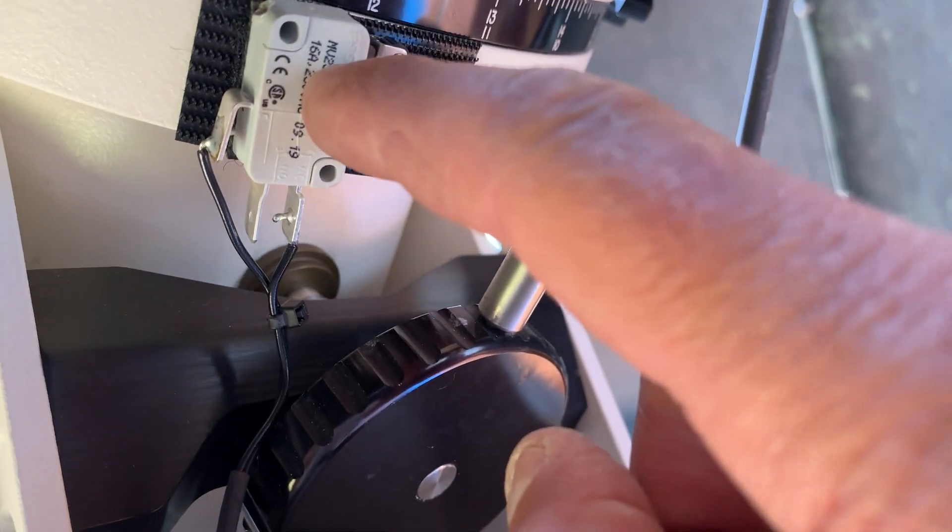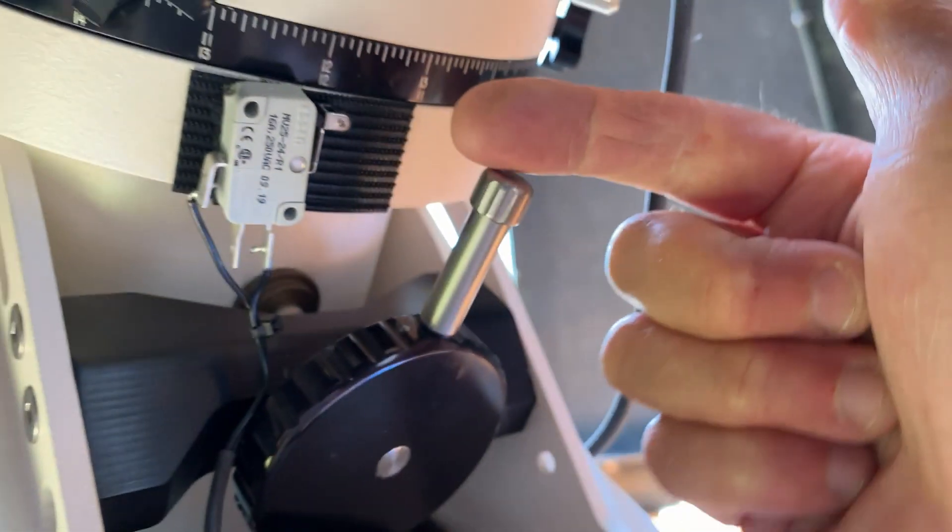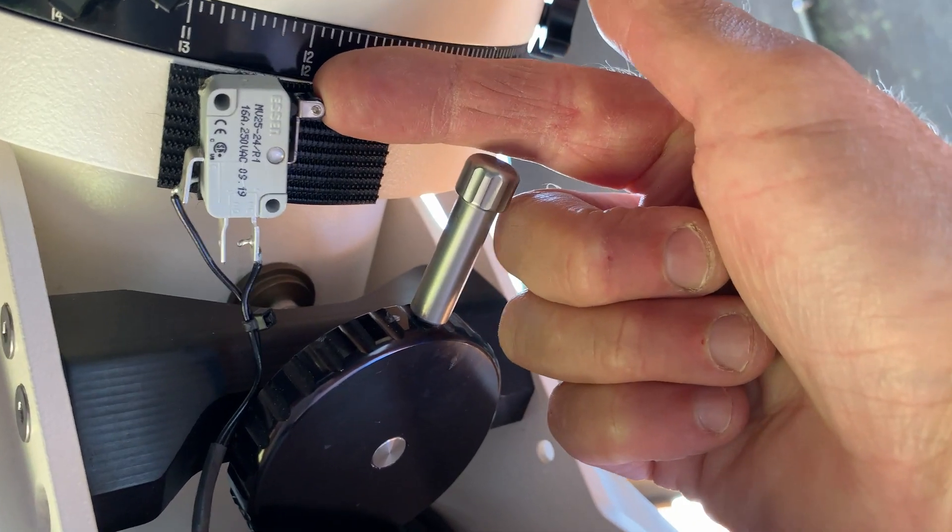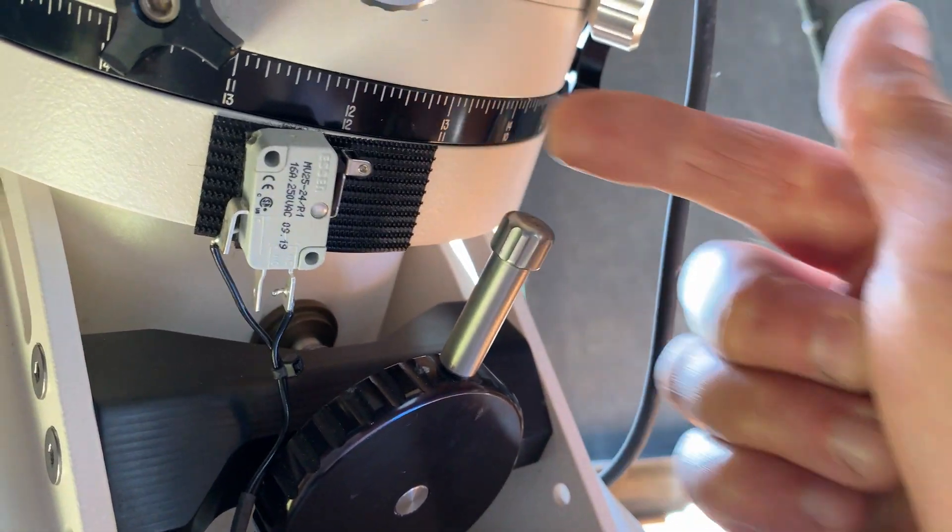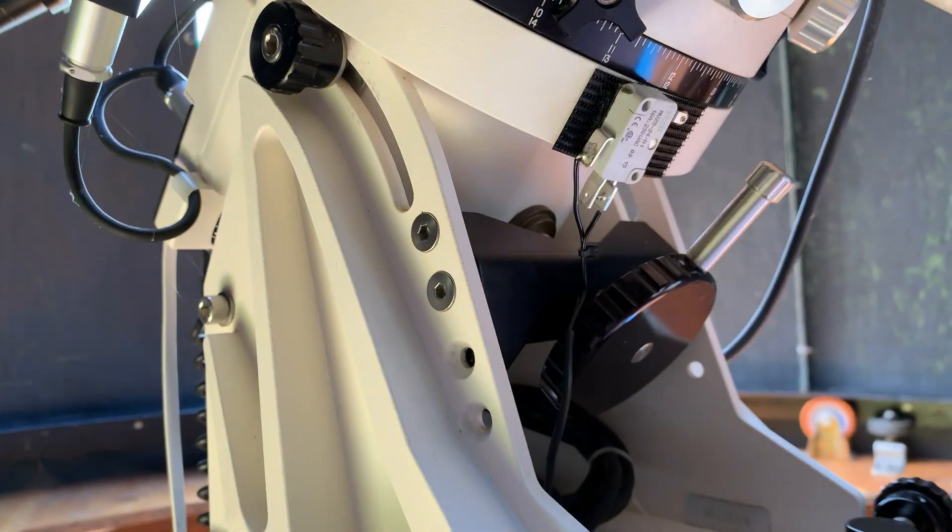This is what I've done. This is a switch, a limit switch. When something comes along here and hits that, it knocks the power off to the mount, just the 12 volts.